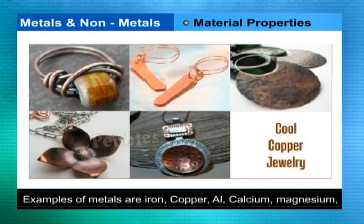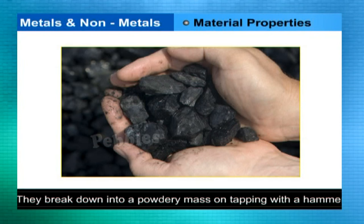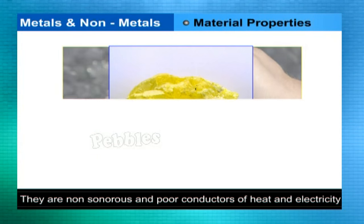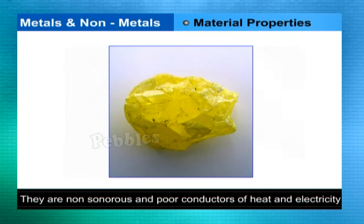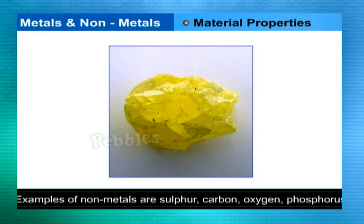In contrast, materials like coal and sulphur are soft and dull in appearance. They break down into a powdery mass on tapping with a hammer. They are not sonorous and are poor conductors of heat and electricity. These materials are called non-metals. Examples of non-metals are sulphur, carbon, oxygen, phosphorus, etc.